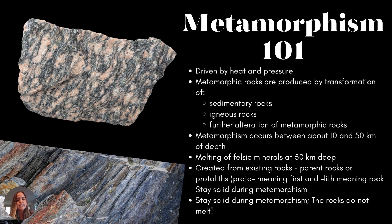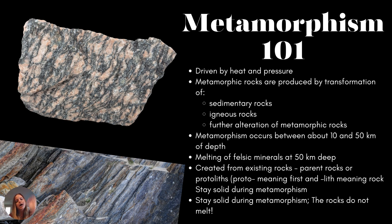The reason 50 kilometers is the cutoff is because at 50 kilometers, felsic minerals start to melt. Felsic minerals are those light-colored minerals high in silica content. Silica has a much lower melting temperature than something like olivine, which has high magnesium and iron and is low in silica. If you remember Bowen's reaction series, olivine crystallizes first and quartz crystallizes last. When things start melting, quartz will be the first to melt and olivine would be the last.